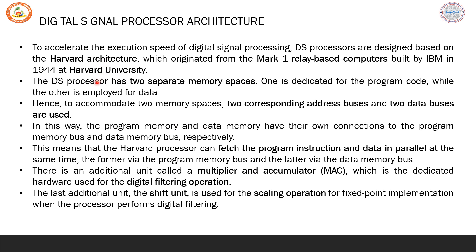In addition to the Harvard architecture, the other unit commonly found in digital signal processors is the multiplier and accumulator, or MAC. This comes from the reason that most DSP equations involve multiplication followed by addition, and this operation has to be done repeatedly. Hence, a dedicated hardware unit called MAC will be beneficial. An example is a digital filtering operation where MAC is used, since it involves the same operations of multiply followed by addition.